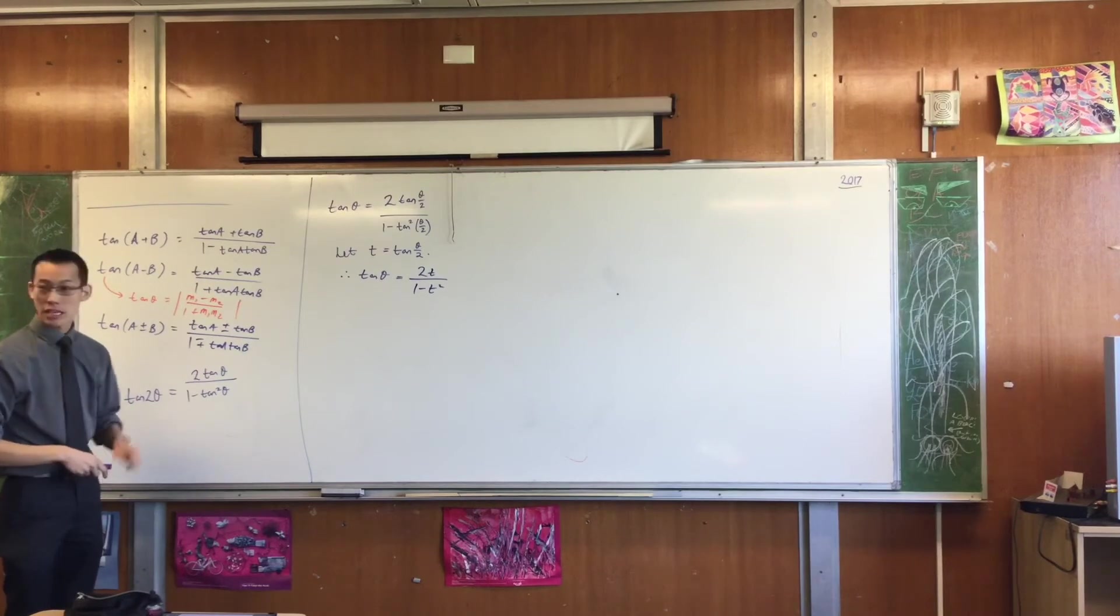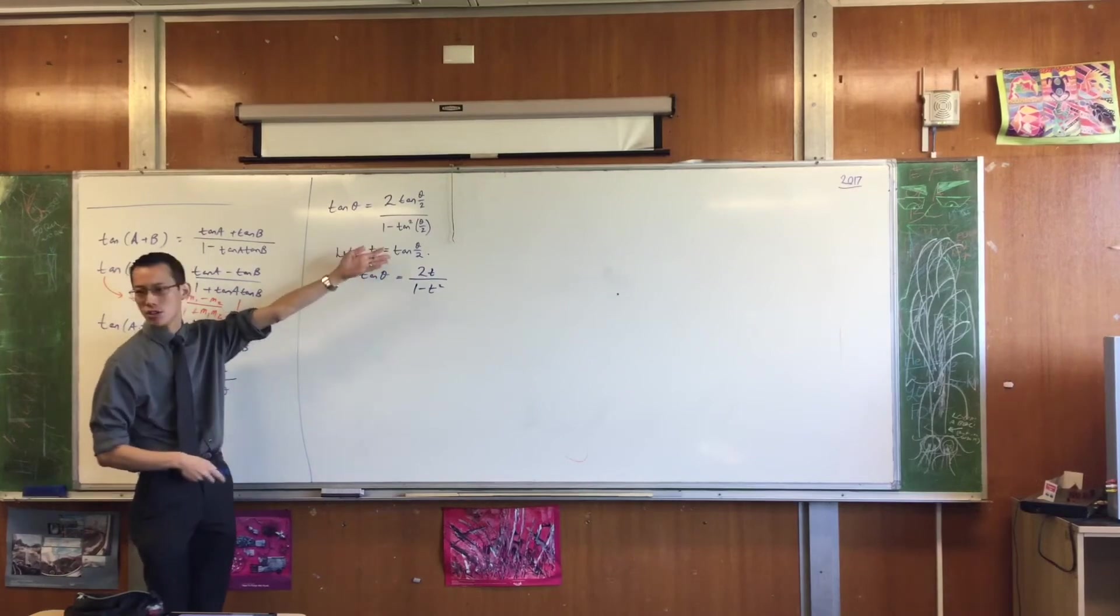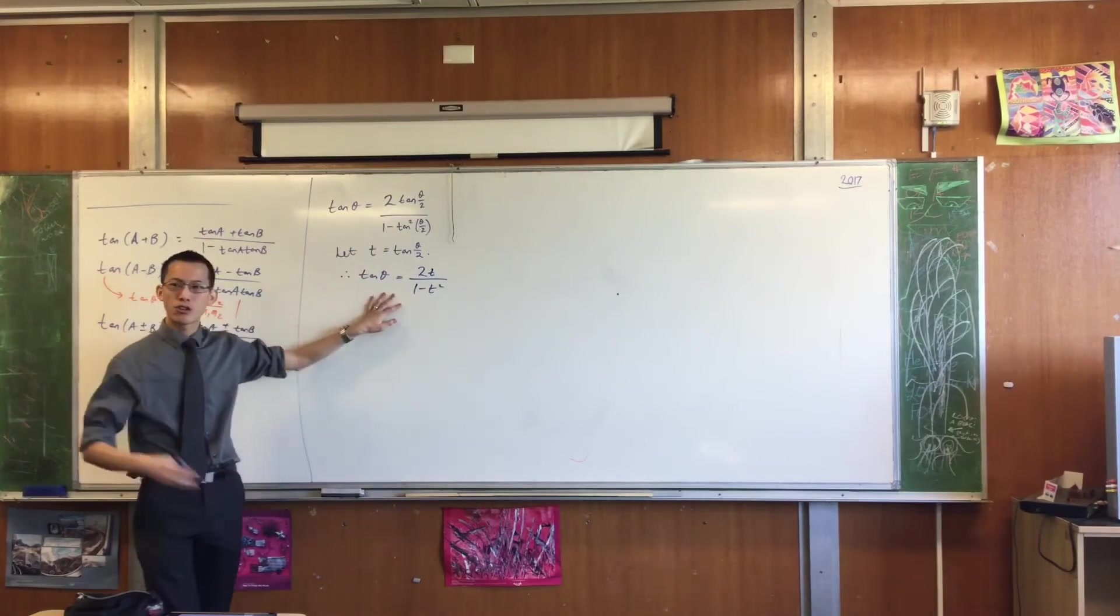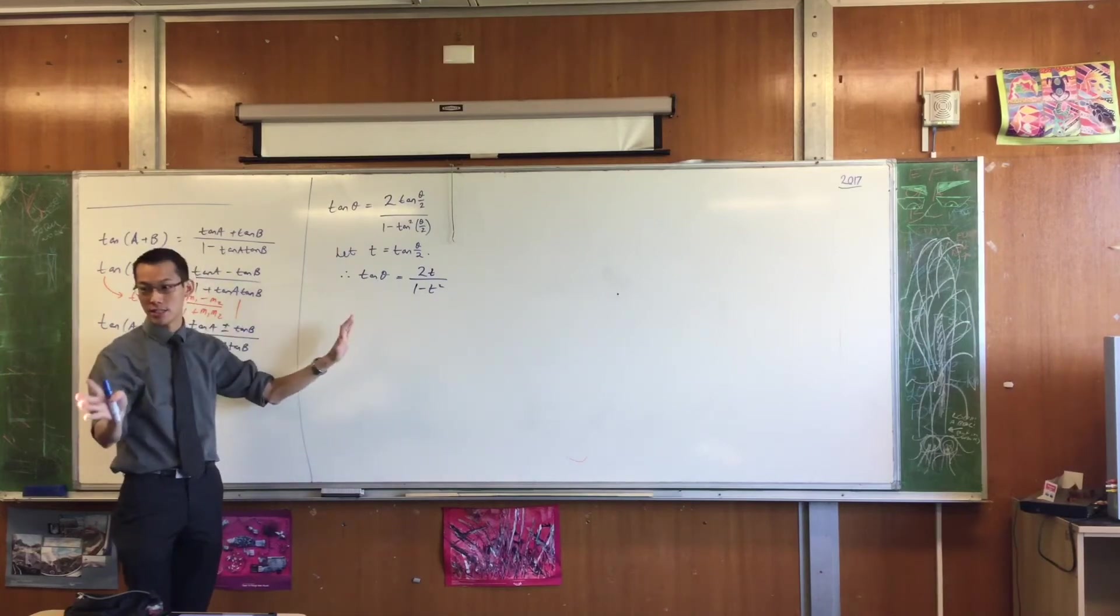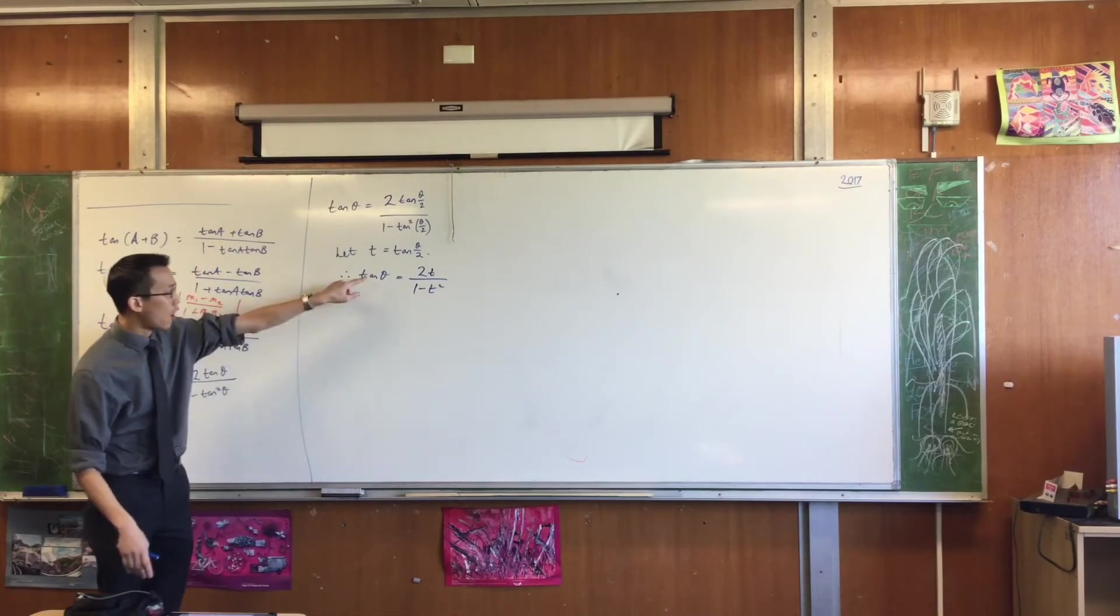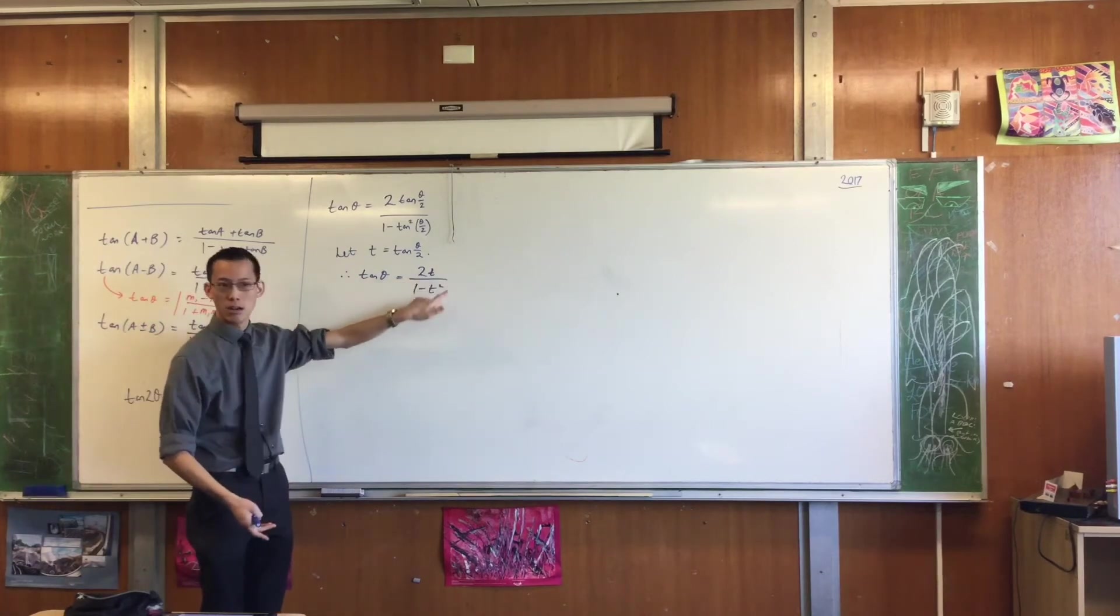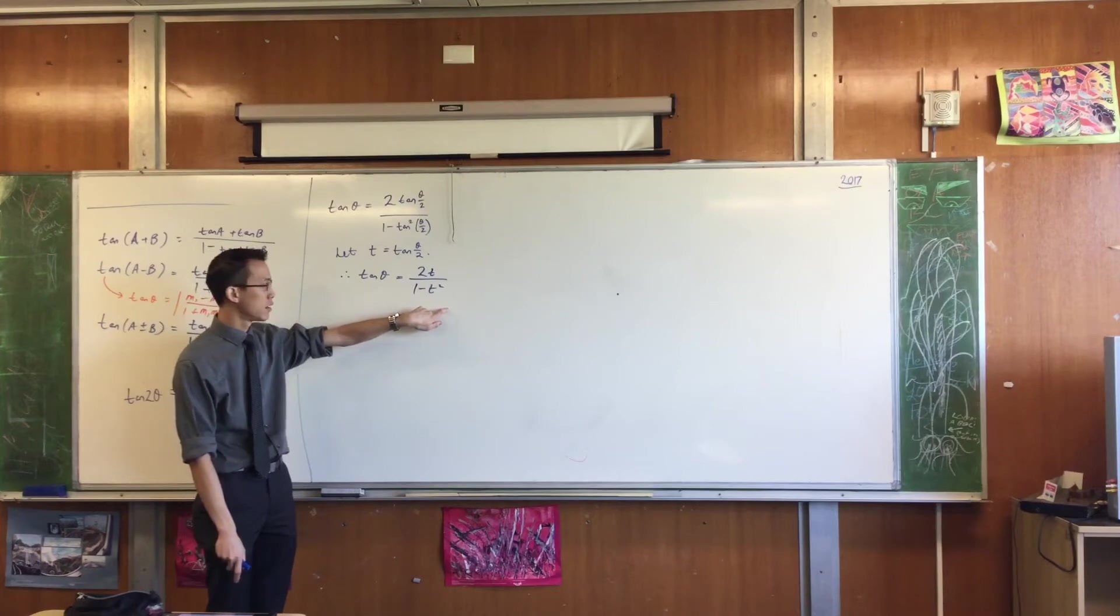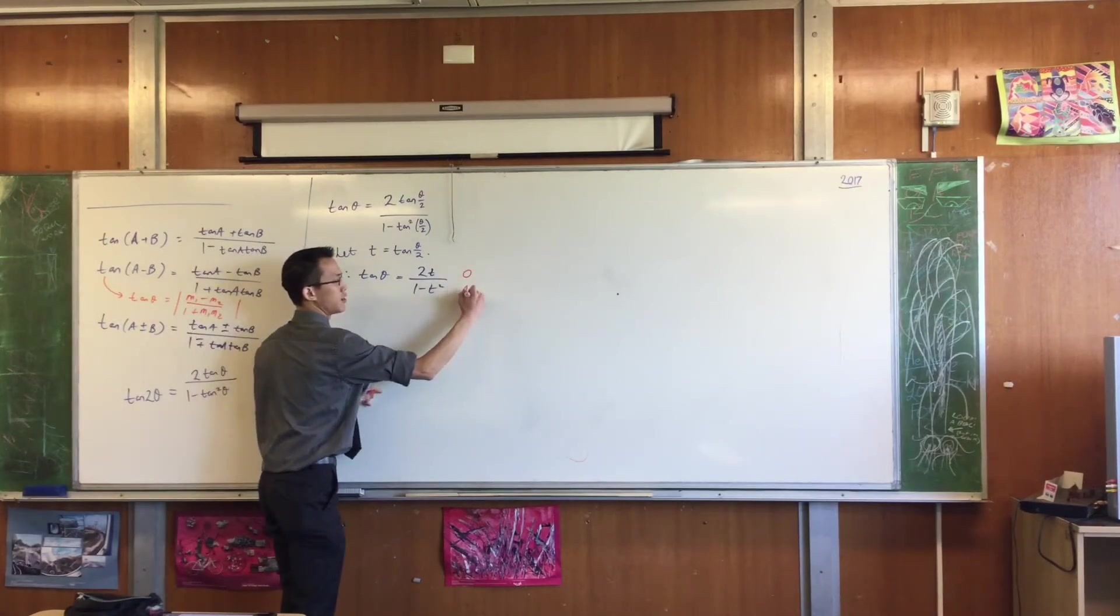Now, what's even cooler at this is that if this is true, like I've just done a substitution, just relabeled. If this is true, it implies that there's some right angle triangle somewhere out there in existence where opposite on adjacent, that's what tan is, is 2T / (1 - T²). Opposite on adjacent.